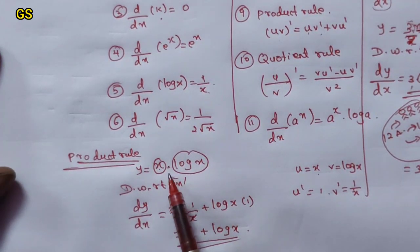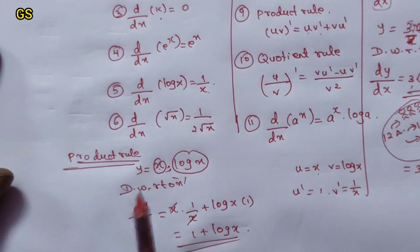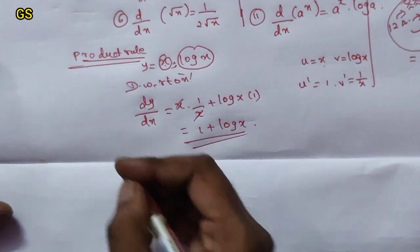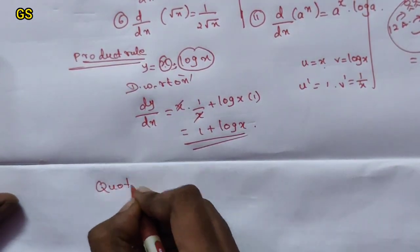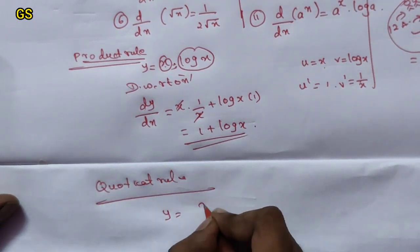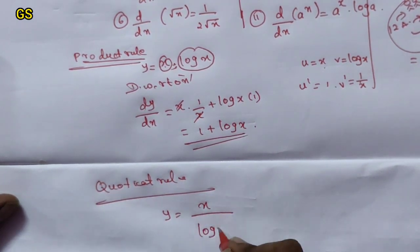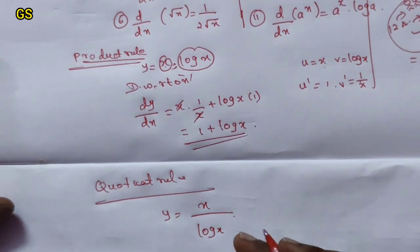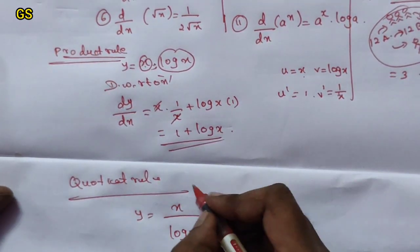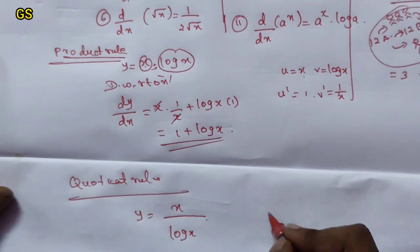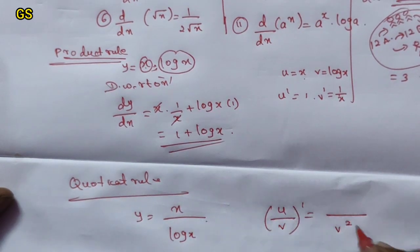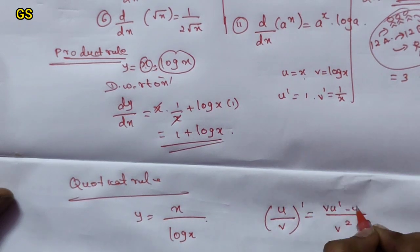Product rule is the answer. When two functions are in a product, use the product rule. When there is division, use the quotient rule — also called the division rule. For the quotient rule, y is equal to x by log x. The formula is: dy/dx equals v squared in the denominator, with v times u dash minus u times v dash in the numerator.